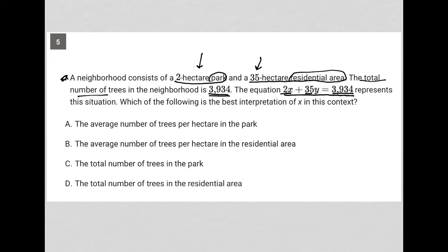So if 2 times x plus 35 times y equals 3,934 with relation to trees, then x must be the number of trees per hectare on the park, right? Because then that's why you multiply it by 2. And y must be the number of trees per hectare in the residential area, which is why you multiply it by 35.